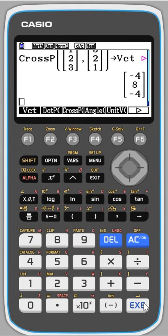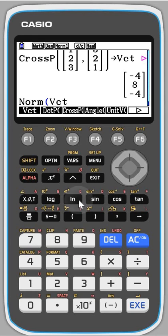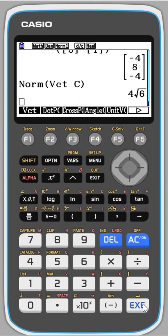Suppose I want the magnitude of that. We're in the Options and the Mat Vect bit again. I'm going to press F6 and you can see norm. So now if I do norm and then vector, I want Vector C. Then it works out the magnitude for me.